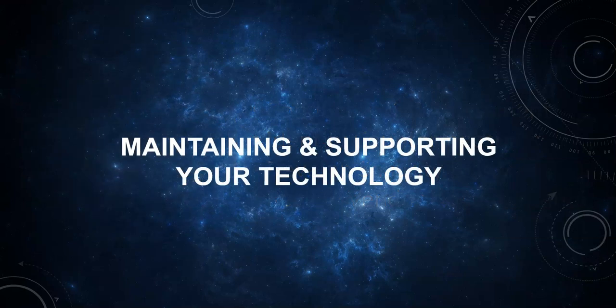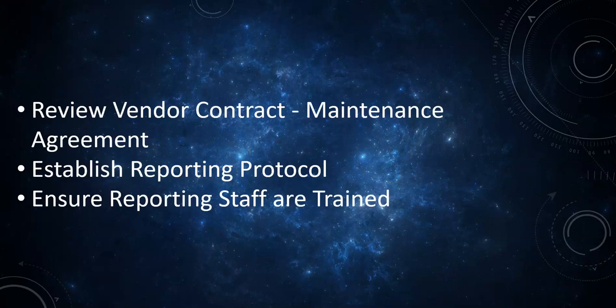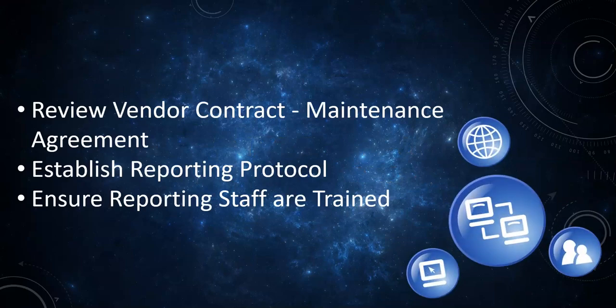The sixth step is maintaining and supporting the technology. The library administrator and systems administrator should review and familiarize themselves with the vendor contract, in particular the maintenance agreement. Understanding what the vendor will provide is important for planning to maintain and support the technology. In addition, the library administrator should establish a staff member or submission form for reporting technical issues. Users need a point person or form to contact if they run into issues while using the chat service. This point person should know how to direct or address the issue. Having these plans in place and being familiar with the vendor maintenance agreement will ensure a smooth process for maintaining and supporting the service.